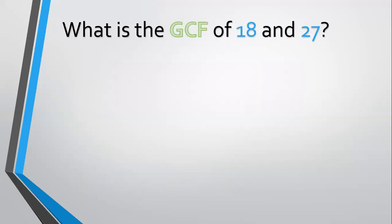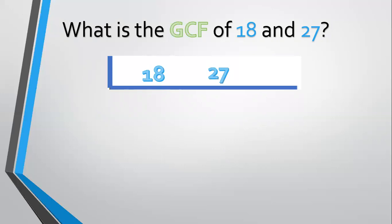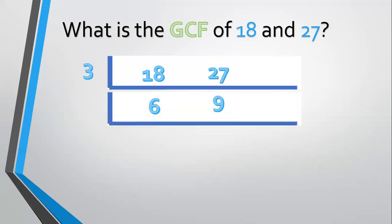Another example — how about 18 and 27 again? List them: 18 and 27. The common factor is 3. 18 divided by 3 equals 6. 27 divided by 3 equals 9. There's still a common factor — also 3. 6 divided by 3 equals 2. 9 divided by 3 equals 3. Now 2 and 3 have no more common factor, so multiply: 3 times 3 equals 9. The GCF equals 9.